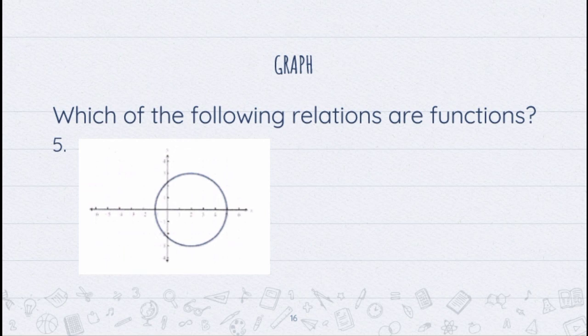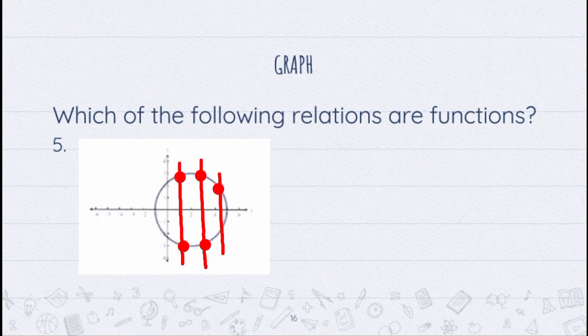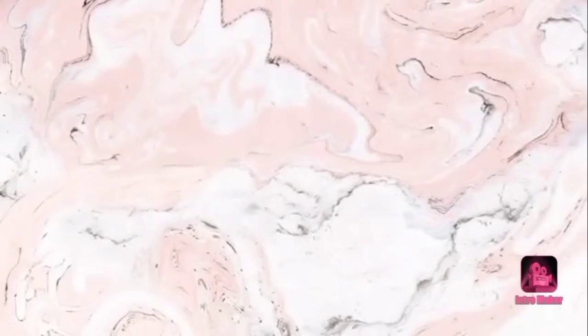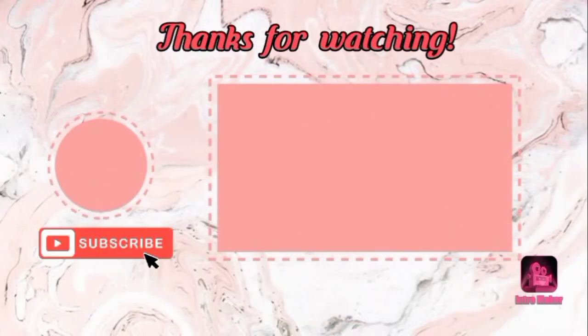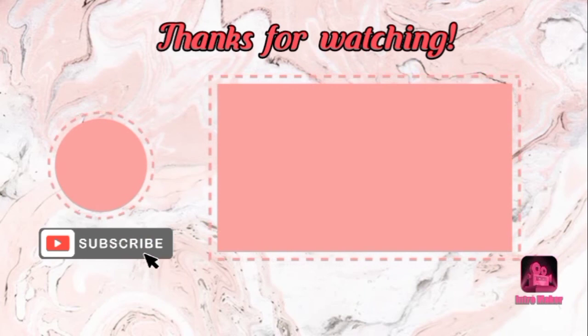We are now on our last item — it's a graph of a circle. Placing vertical lines here, you'll see that each vertical line intersects at two points. Therefore, this is not a function. That is all for today. Thank you and see you on our next video lesson.